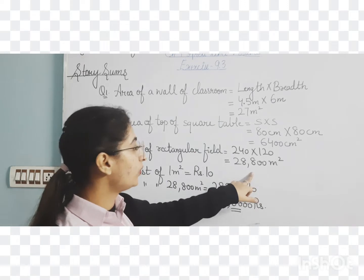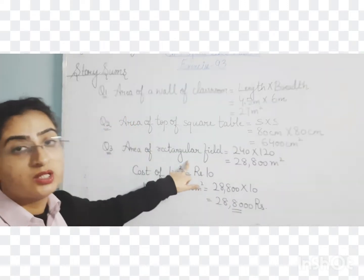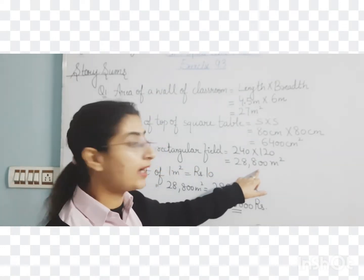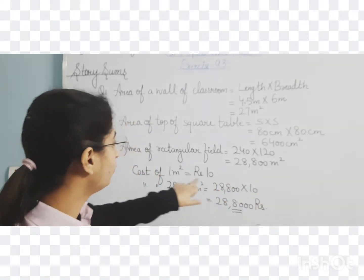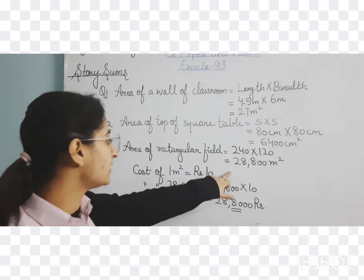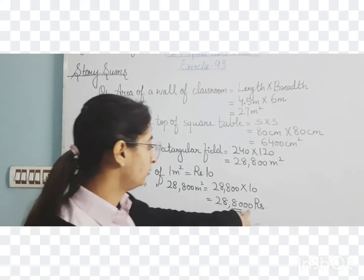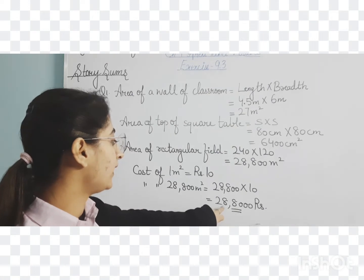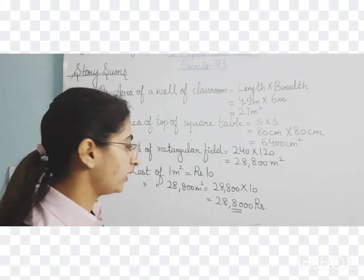The area of the rectangular field is 28,800 meter square. To mow the grass, we need to cover this entire area. The cost of one meter square is rupees 10, so the total cost is 28,800 multiplied by 10, which equals 2,88,000 rupees.